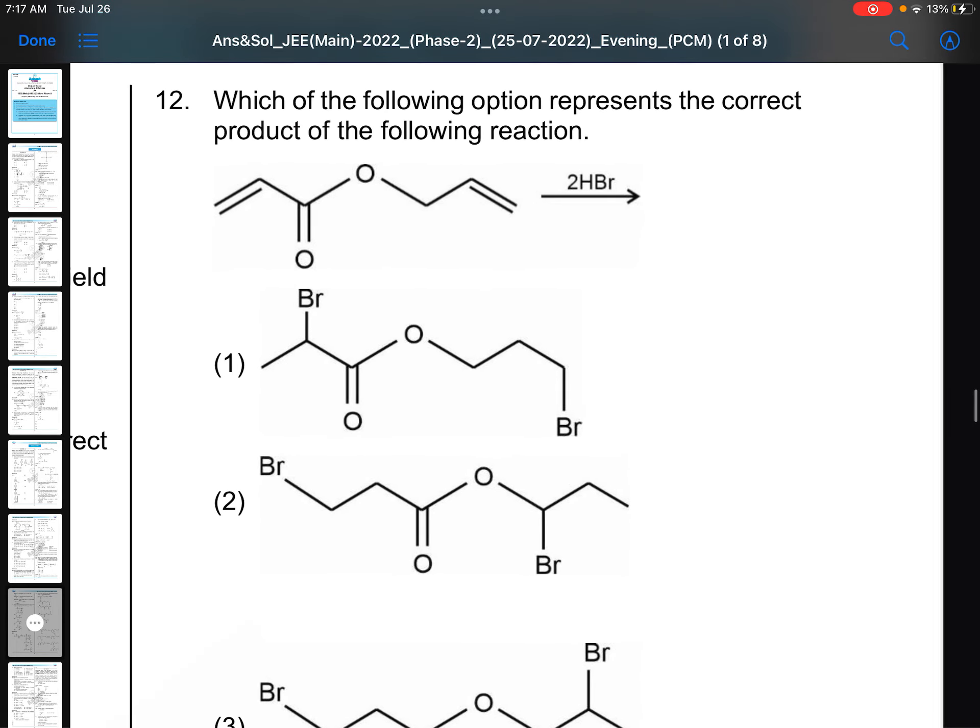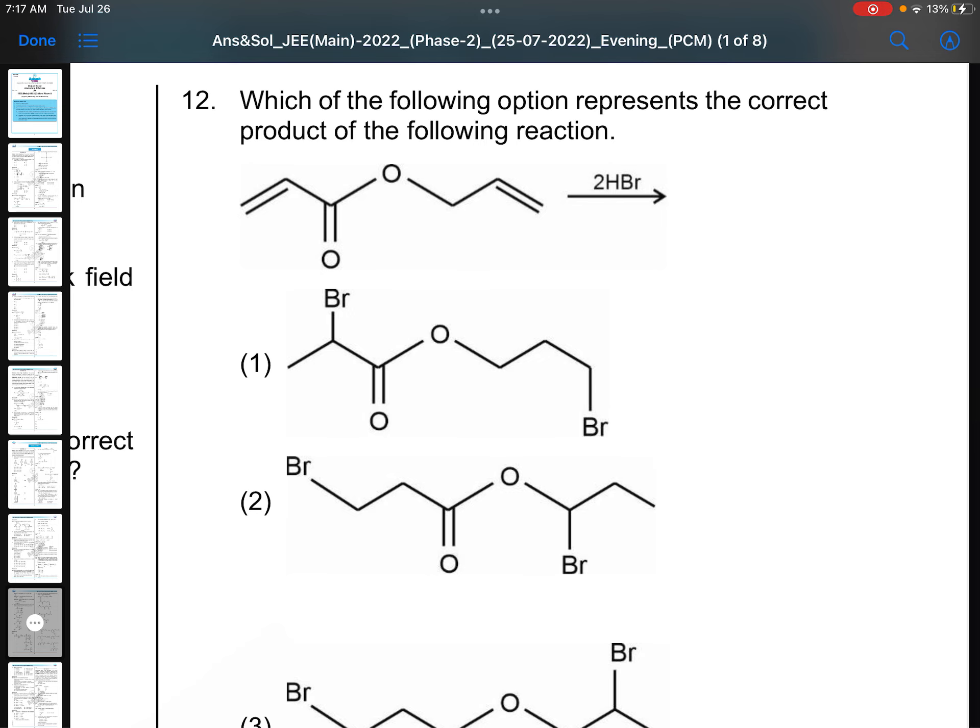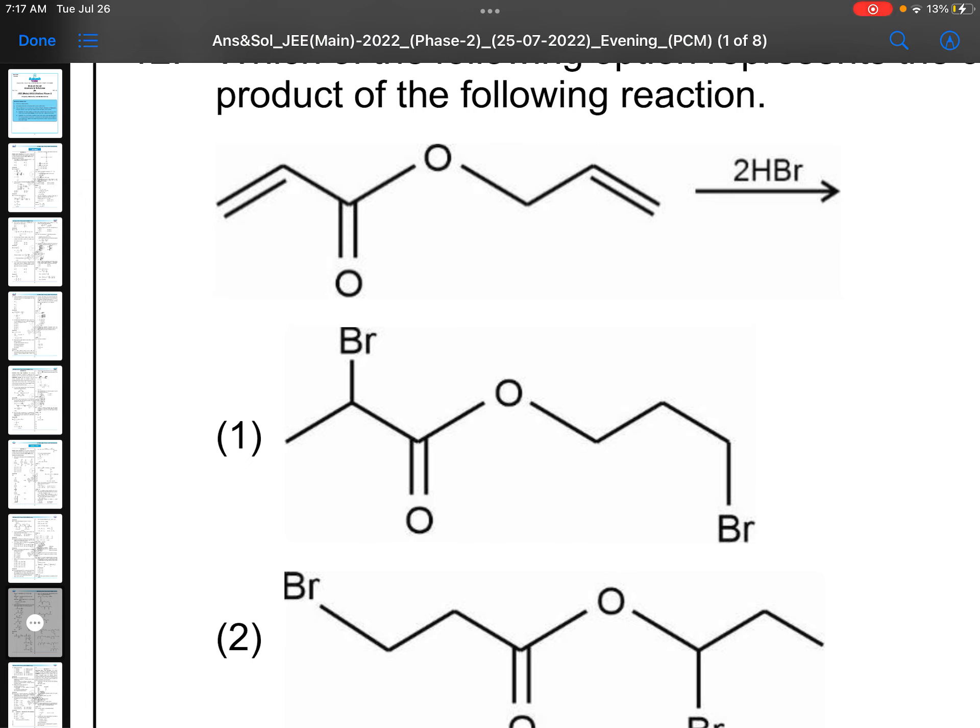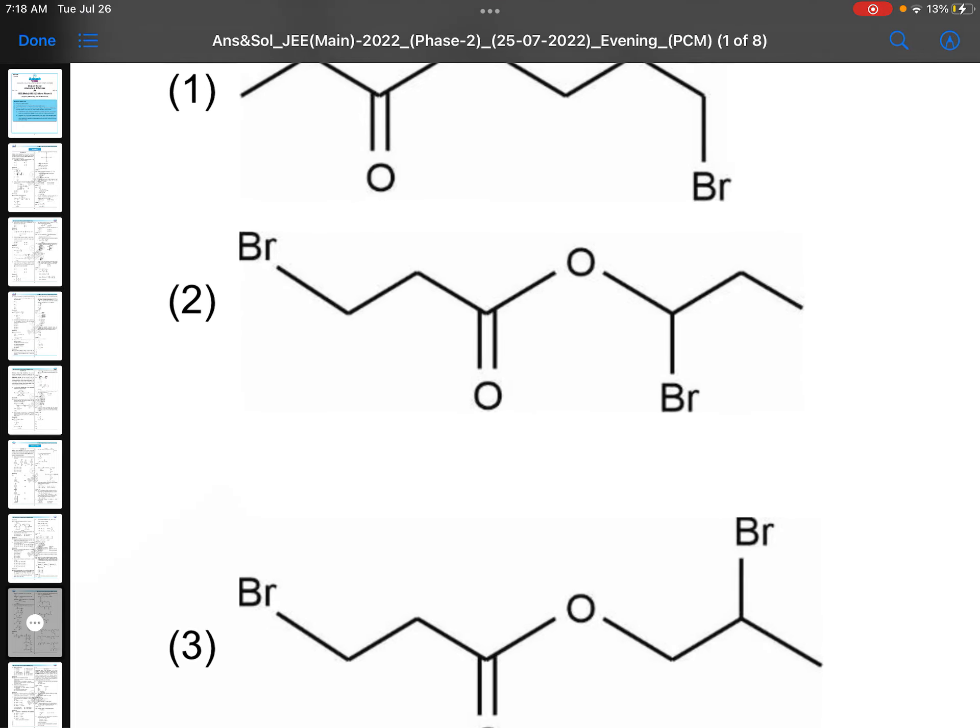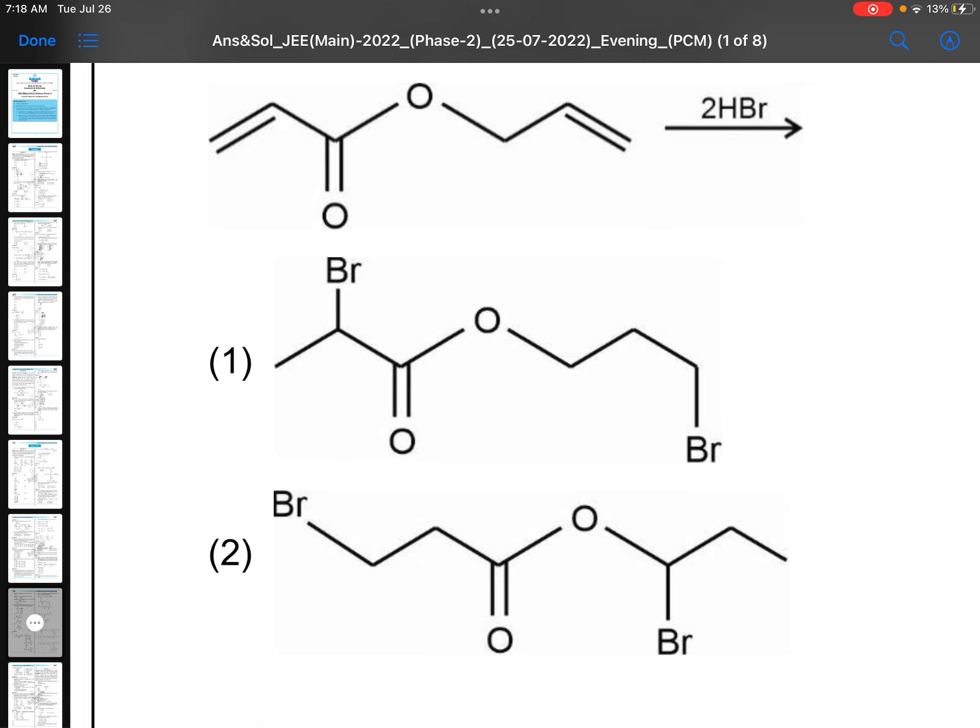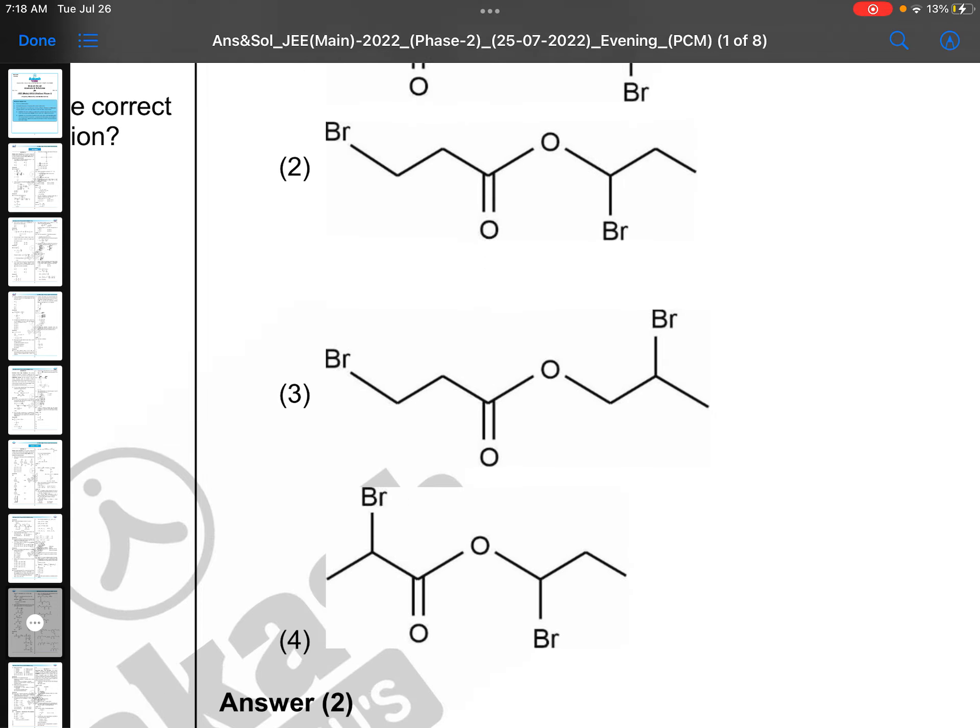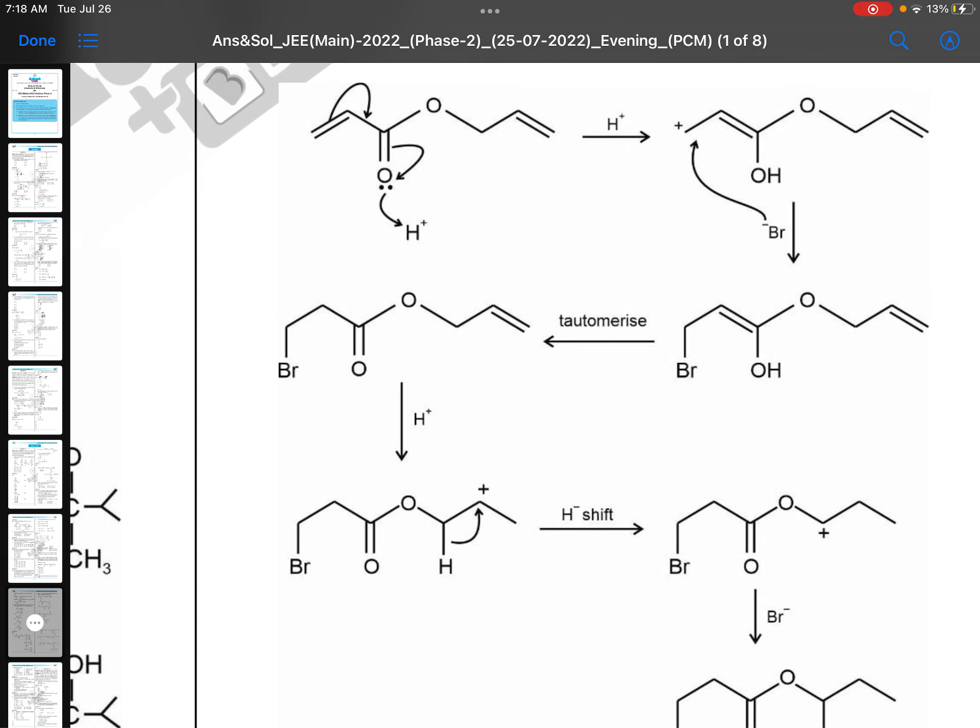Which is the following option represents the correct product of the following reaction? This is again a very good question. Left side you see C double bond O group is there, so anti-Markovnikov addition takes place. Electron withdrawing group is there. Right side you see oxygen is present, that is why proton shift will be taking place, and finally you will be getting there bromine at this place. So option two should be the right answer. Left hand side anti-Markovnikov because of C double bond O group, right hand side proton shift because of oxygen lone pair structure. This is the mechanism, no need of this much mechanism.